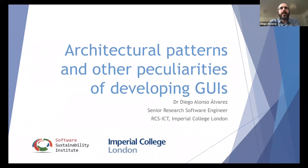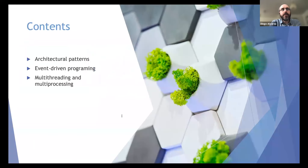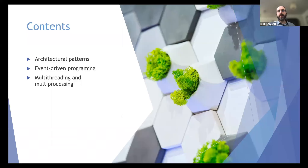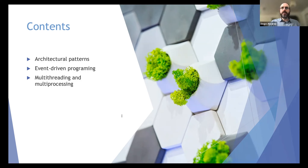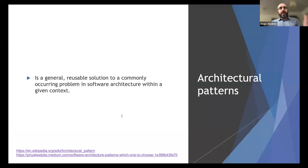This first talk is about architectural patterns and other peculiarities of developing GUIs. The contents will cover architectural patterns, event-driven programming — which is the fundamental thing in developing GUIs — and multi-threading and multi-processing, which has a slightly different meaning when we talk about GUIs compared to research software.